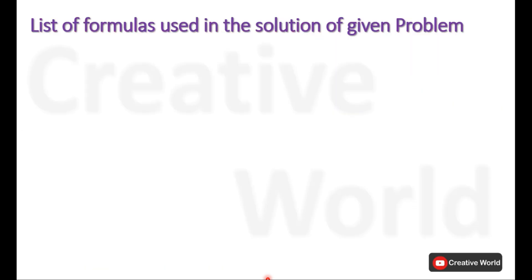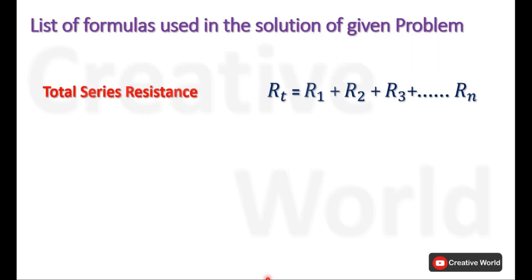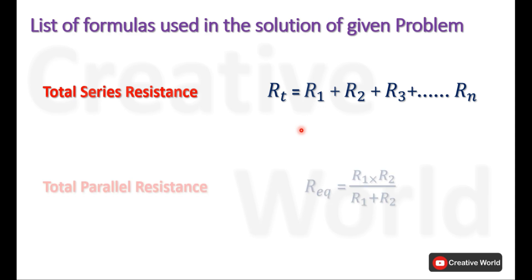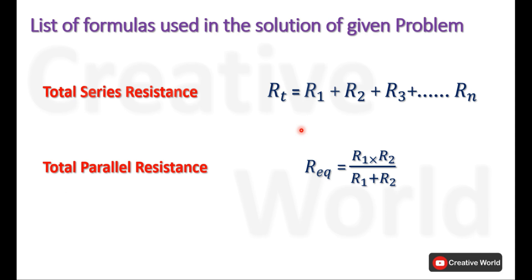While solving this problem we will be using the Total Series Resistance Calculation Formula, where R equivalent of a series circuit is the sum of all resistances in series. We will also use the Parallel Equivalent Resistance formula: R equivalent equals the product of both resistances divided by their sum.